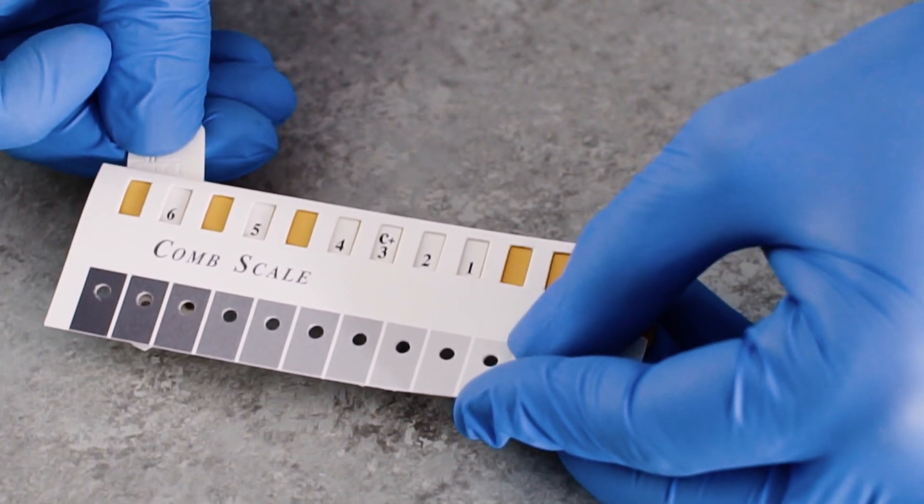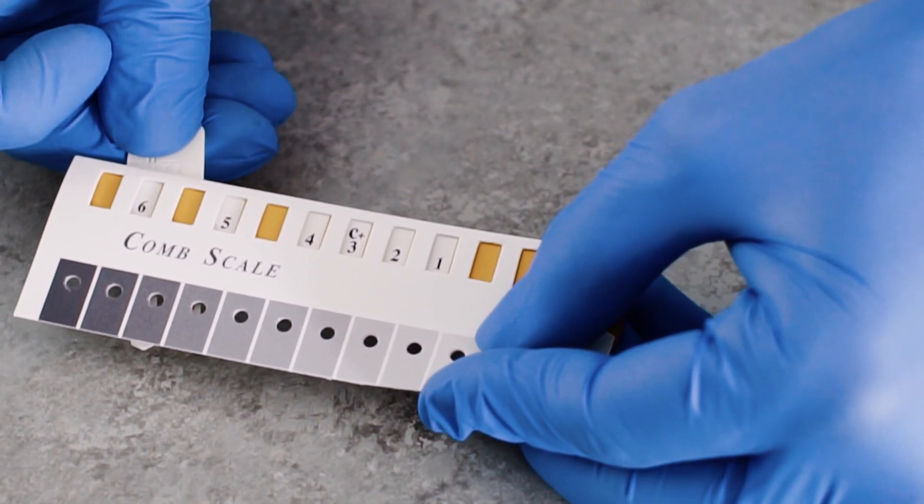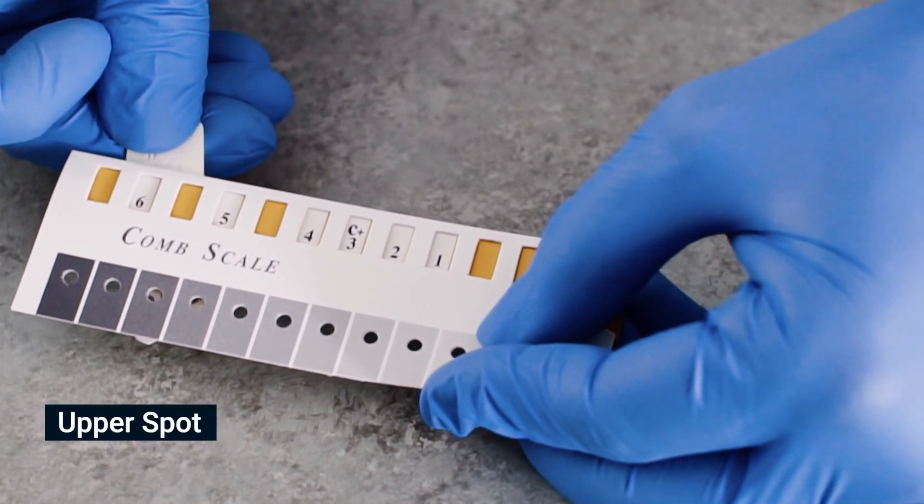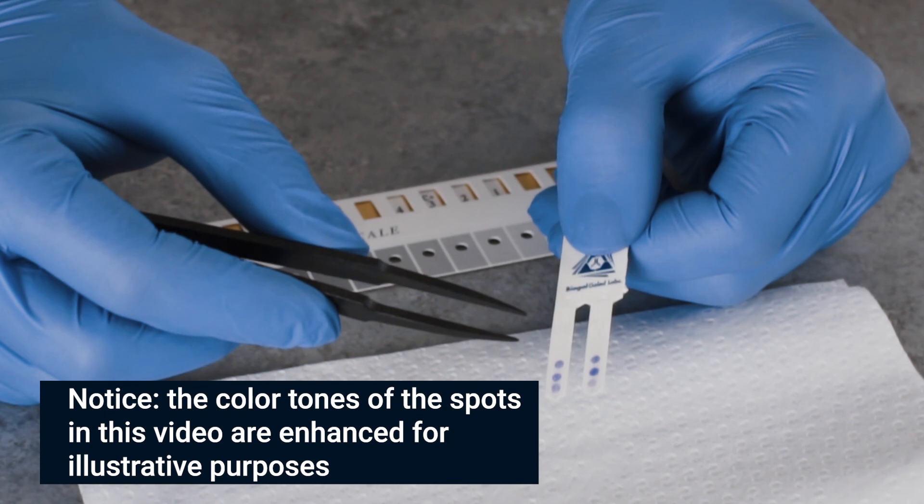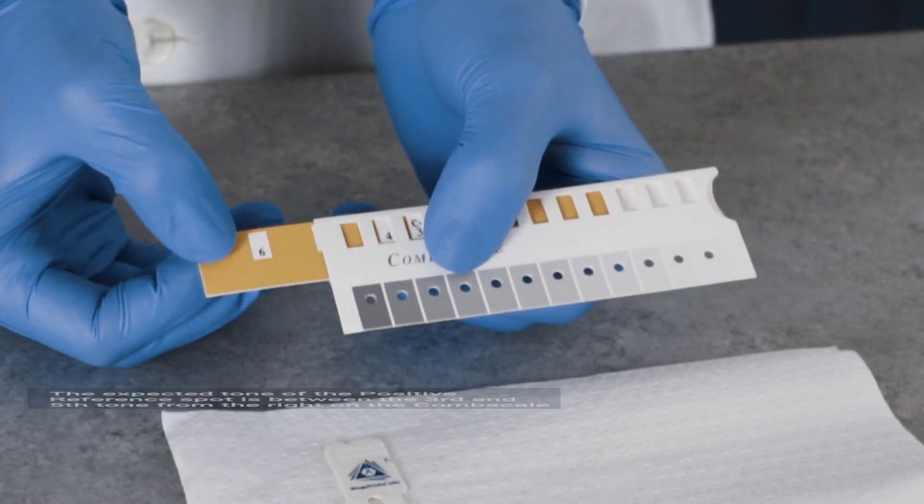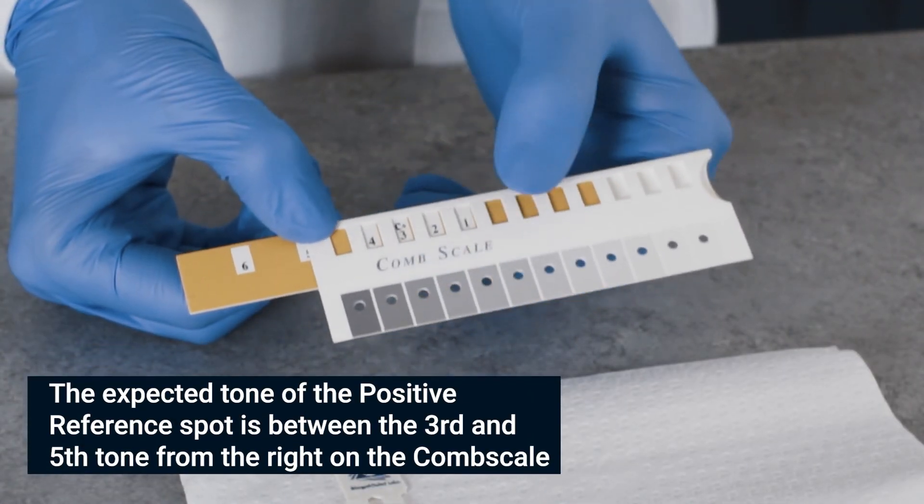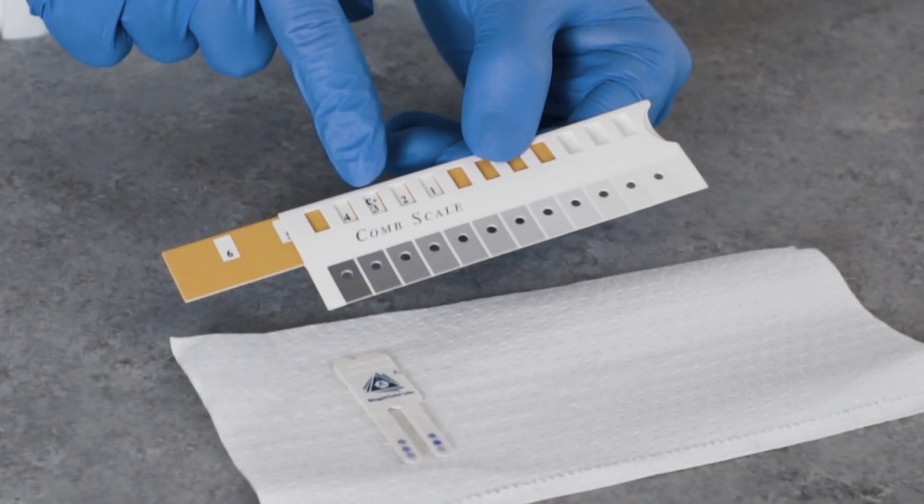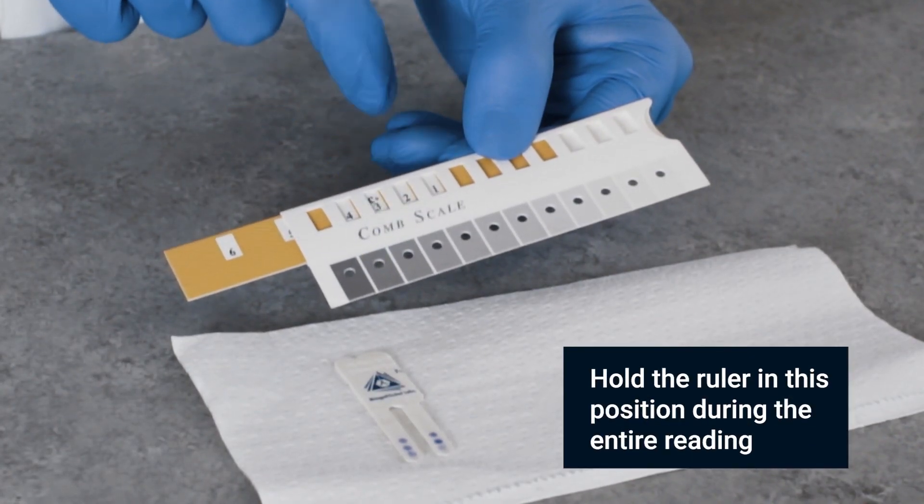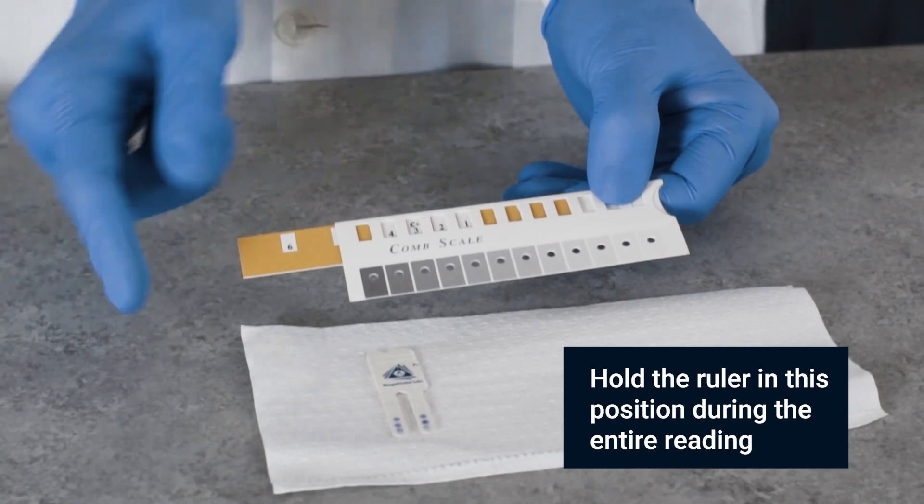Find the tone of purple-gray on the comb scale that most closely matches the positive reference spot. Slide the yellow ruler until the C+ mark appears in the window above the color you just found. This calibrates the C+ to S3, which is the cutoff point to which test spots will be compared.